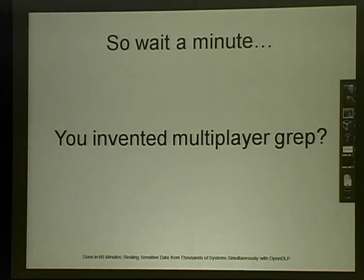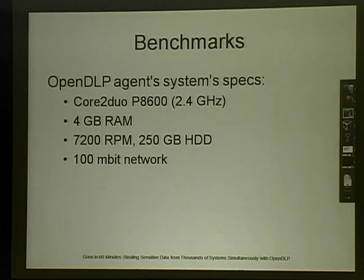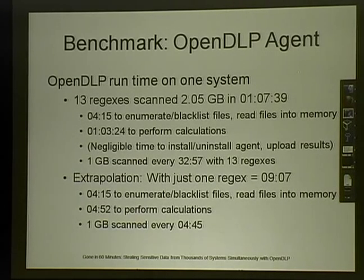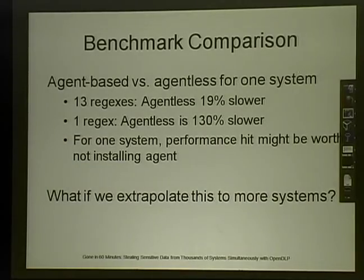You might say this is basically multiplayer grep — and yeah, kind of. On a modern system on a 100 megabit network, the agent processed two gigs of data with 13 regexes in just over an hour; with just one regex it took about nine minutes. An agentless scanner has to download those files across the network to your own system, which takes considerably more time. For 13 regexes the agentless approach takes 1 hour 20 minutes, but for just one regex it's nearly 22 minutes — up to twice as slow.